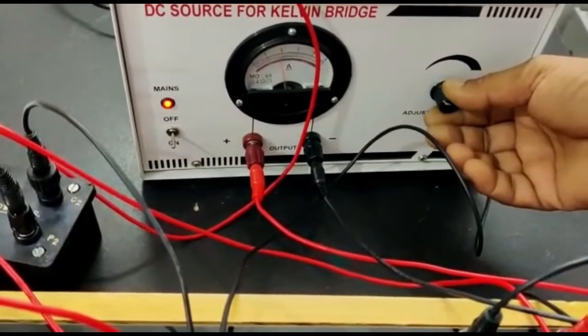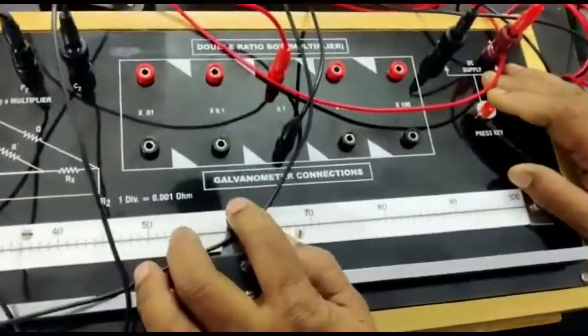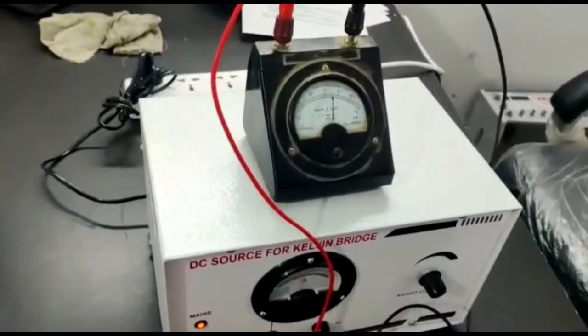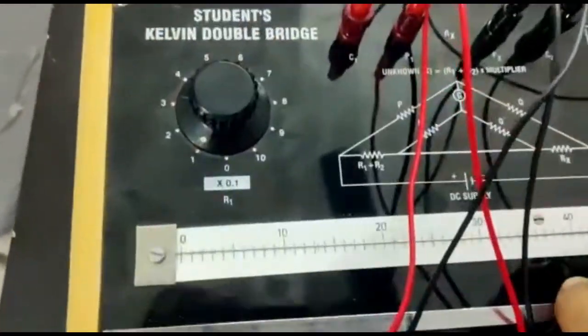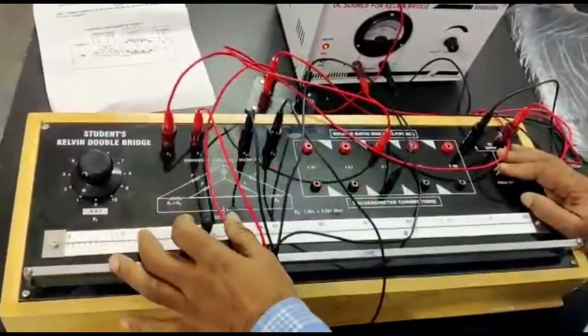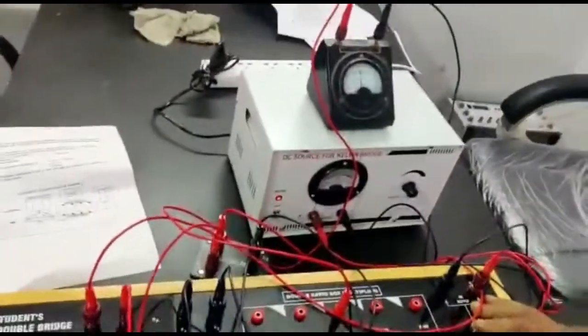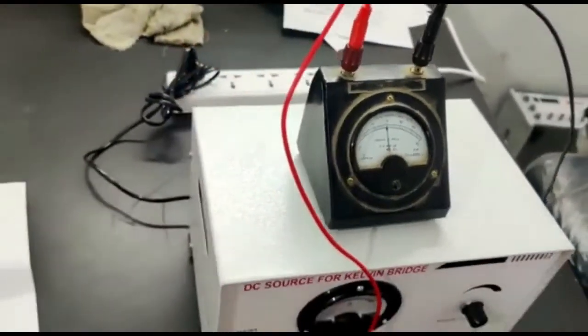Press and hold both keys. There will be some deflection on the galvanometer. To minimize this deflection, adjust the dial R1 using the jockey key. Here is the minimum deflection.